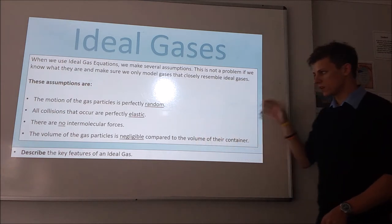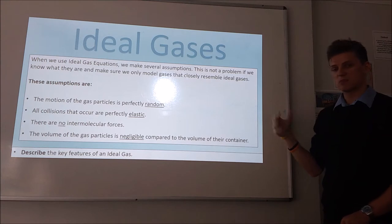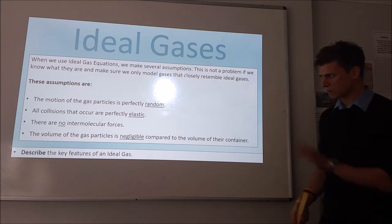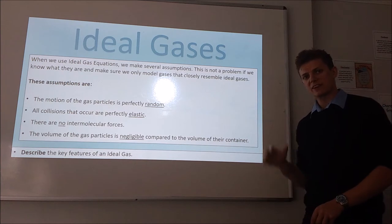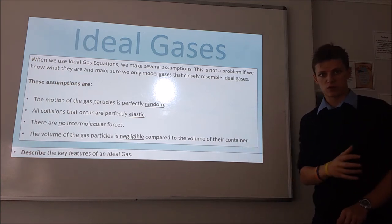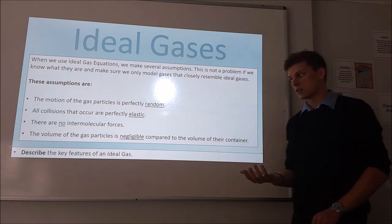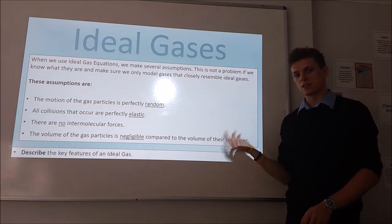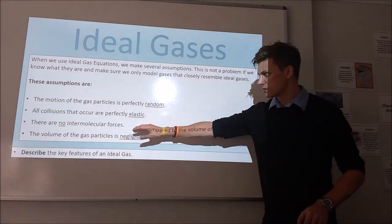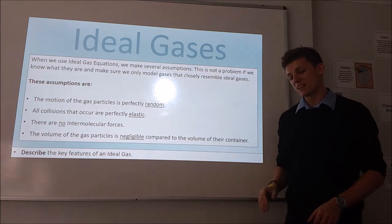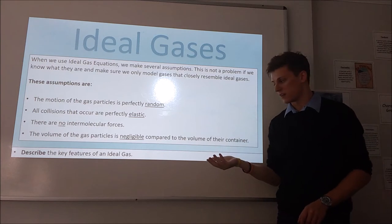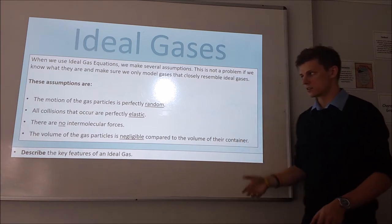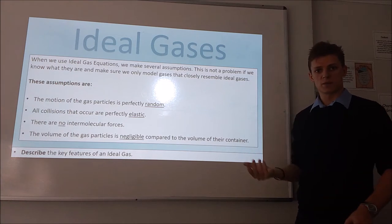An ideal gas is one we consider to have the following properties — these are assumptions we make when we model a gas as an ideal gas. First, we model the motion of all the particles as perfectly random, so there's no predictability about the motion of the particles. We assume every collision that occurs is perfectly elastic, so the total kinetic energy is conserved in every collision. We say there are no intermolecular forces, and we say the volume of the gas particles is negligible compared to the volume of the container. If these four are reasonably assumed, we can model something as an ideal gas.